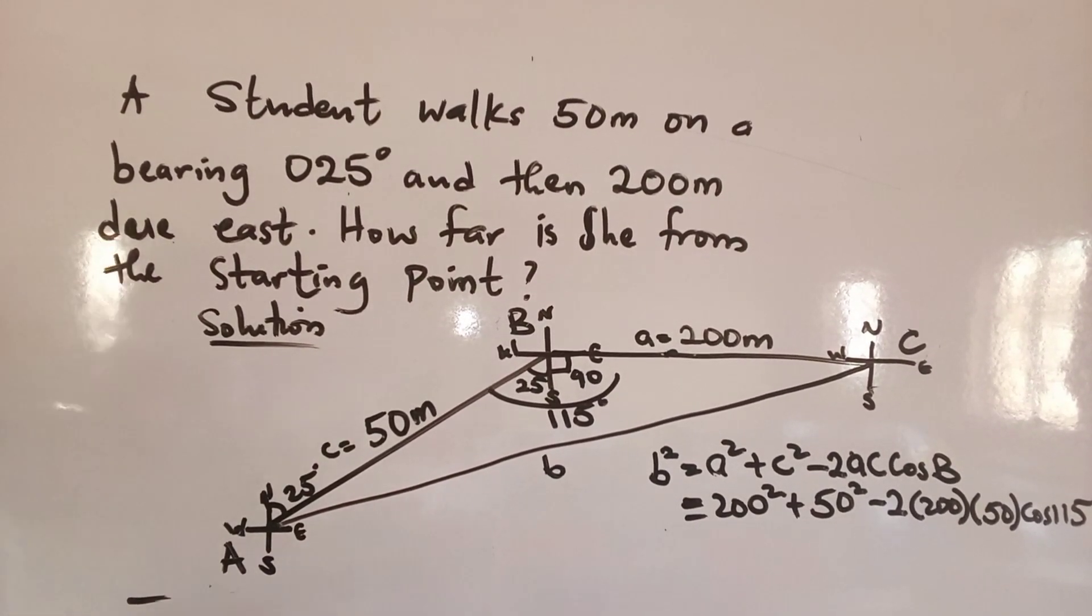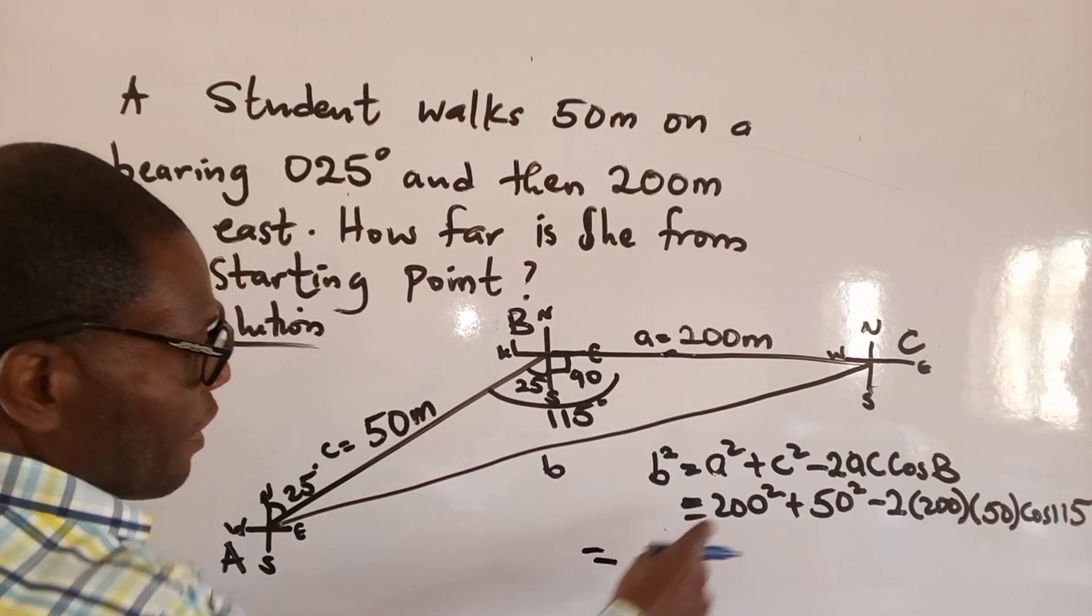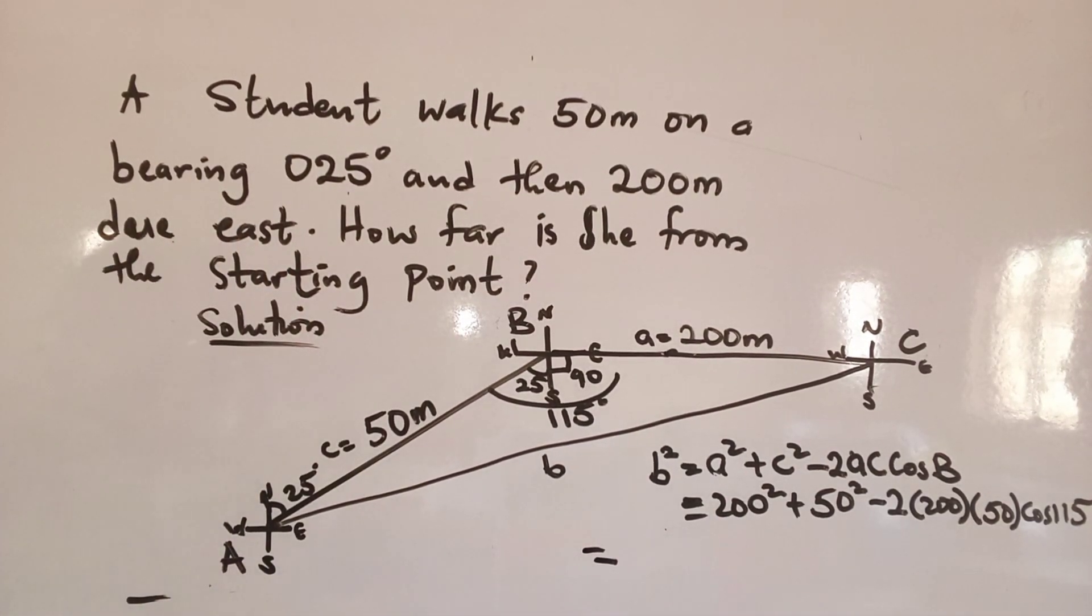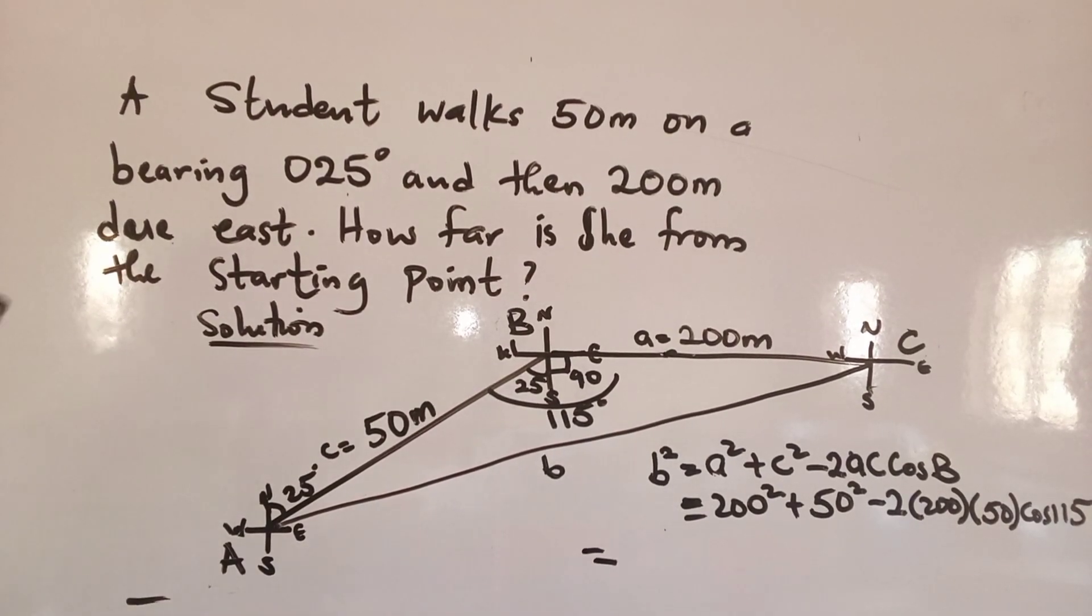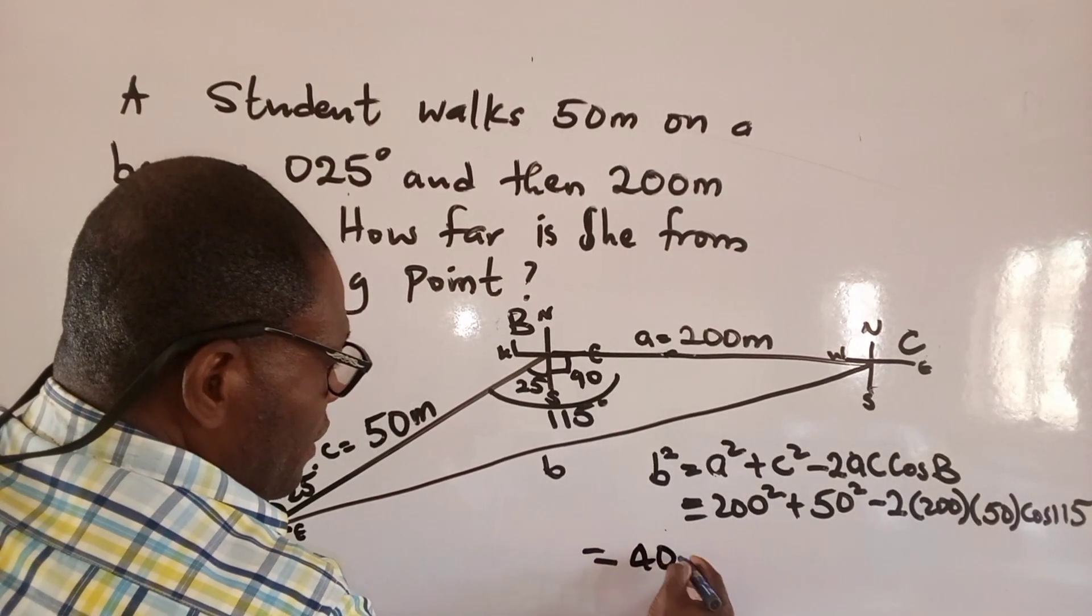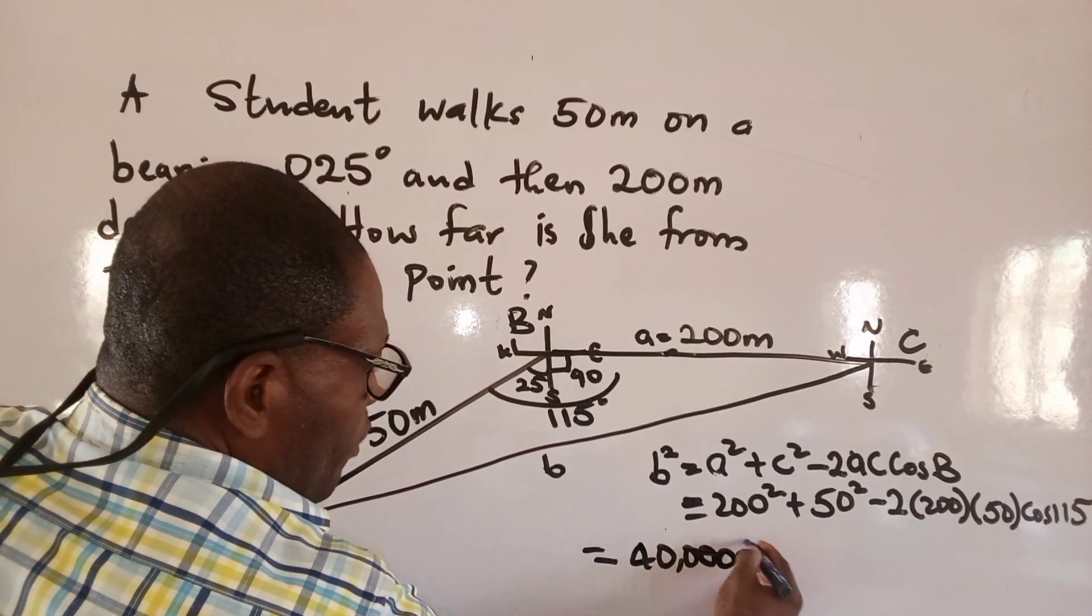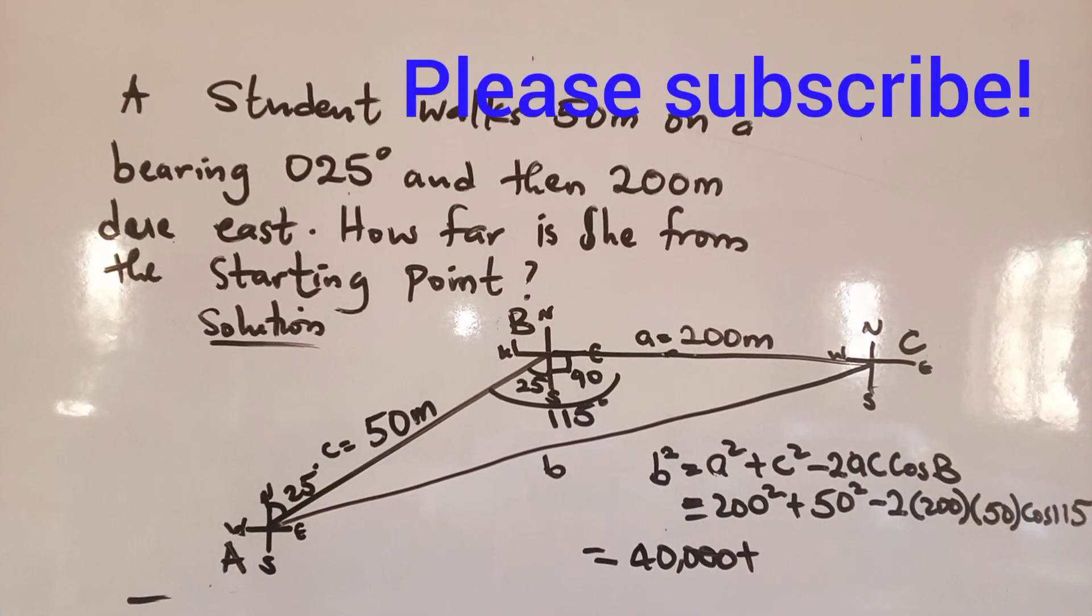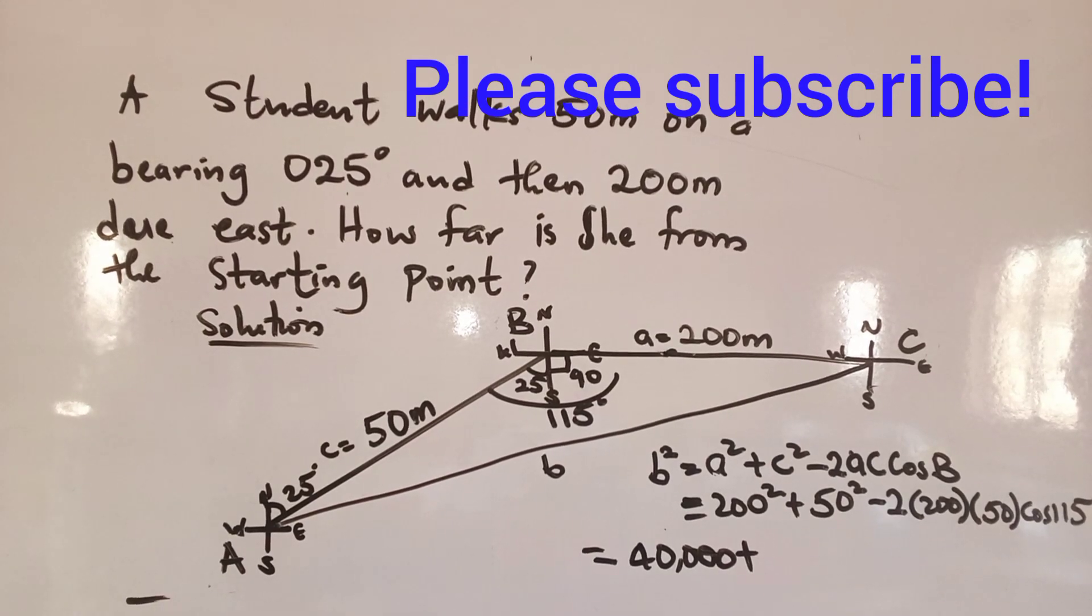So at this point, what is 200²? That is 40,000. Plus what is 50²? That's 2,500.